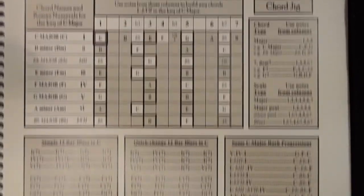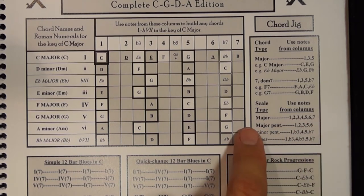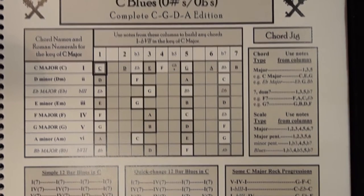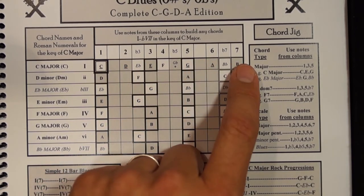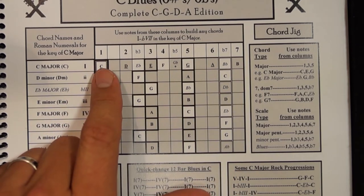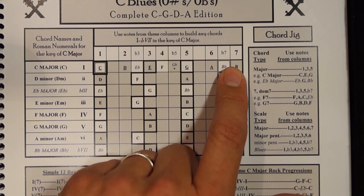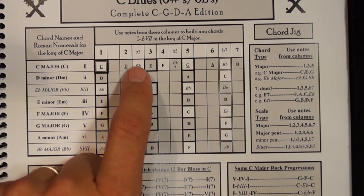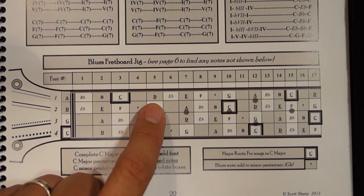To see how the minor pentatonic is built: major scales use notes in the 1 through 7 columns; major pentatonics use 1, 2, 3, 5, 6; minor pentatonics use 1, flat-3, 4, 5, flat-7. So from the major scale C, D, E, F, G, A, B — using the 1, 2, 3, 4, 5, 6, 7 notes — in the minor pentatonic I use 1, flat-3, 4, 5, and flat-7. I'm skipping the 2, the 3, the 6, and the 7, and replacing some with a flat-3 and flat-7.